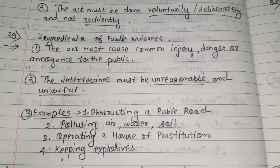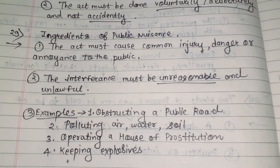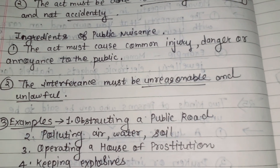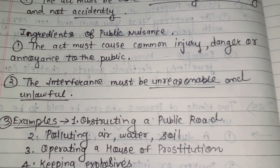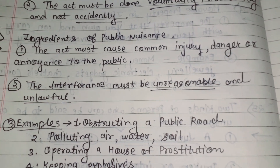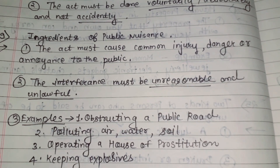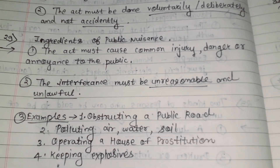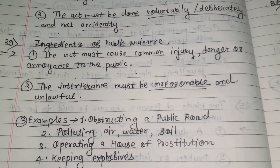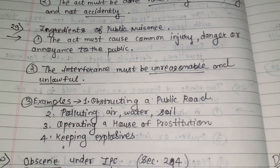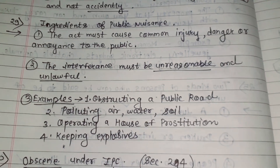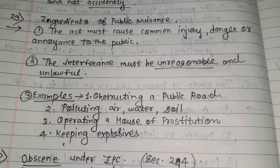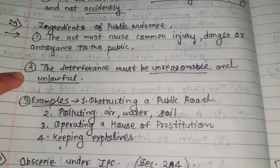Ingredients of public nuisance: The act must cause common injury, danger, or annoyance to the public, meaning a large number of people must be affected by that act for it to be considered a public nuisance. The interference must be unreasonable and unlawful, meaning it must be done without reason and must be of an unlawful nature.